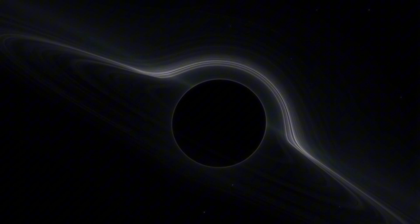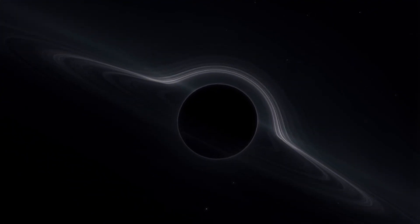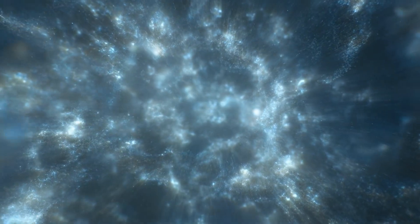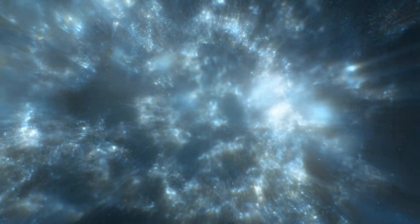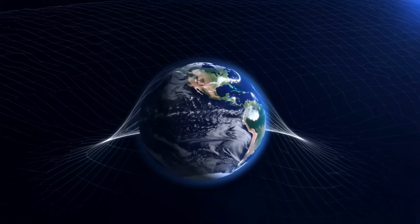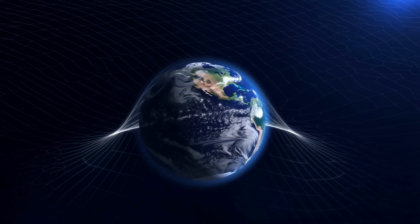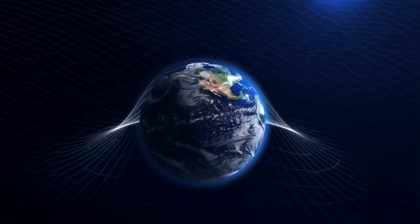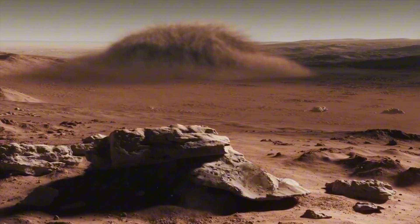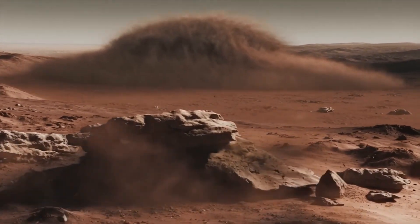As we zoom out, the scale shifts rapidly. Our moon drifts away in silence, the planets follow - Mars, Jupiter, Saturn with its rings, Neptune spinning slowly in the cold. And then the sun fades into the black. It becomes just another point of light among hundreds of billions in the Milky Way galaxy.